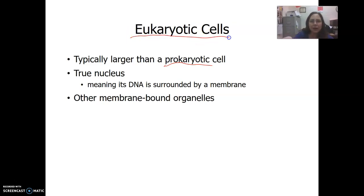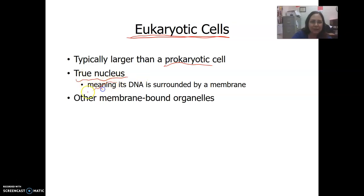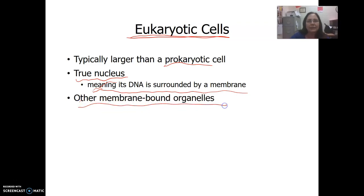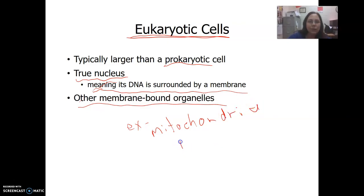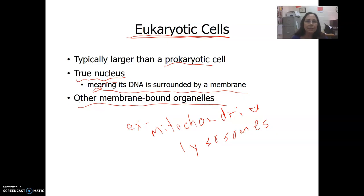Eukaryotic cells are pretty much every other type of organism. Eukaryotic cells have a true nucleus, meaning the DNA is enclosed in a membrane. They also have other membrane-bound organelles — examples would be mitochondria, lysosomes — all of those different organelles that we learned are membrane-bound.